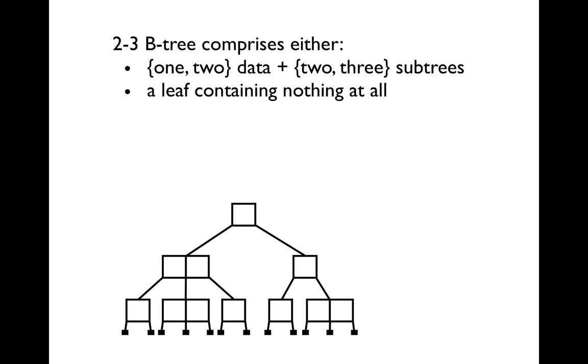We can define a 2-3 B-tree informally by three rules. Firstly, a 2-3 B-tree comprises either a node with one element and two sub-trees, or a node with two elements and three sub-trees, or a leaf containing nothing at all.